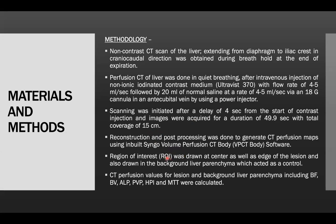Reconstruction and post-processing was done to generate CT perfusion maps using inbuilt single volume perfusion CT body software. Region of interest was drawn at the center as well as at the edge of the lesion and also drawn in the background liver parenchyma which acted as a control. CT perfusion values for the lesion and background liver parenchyma including blood flow, blood volume, arterial liver perfusion, portal venous perfusion, hepatic perfusion index and mean transit time were calculated.